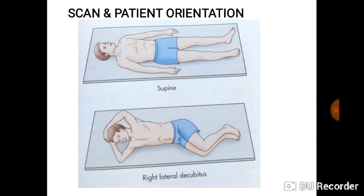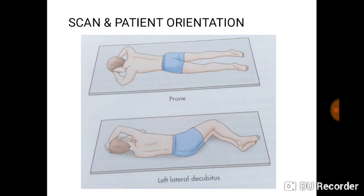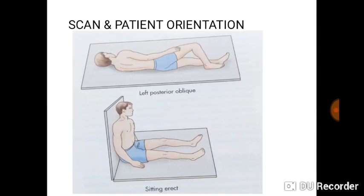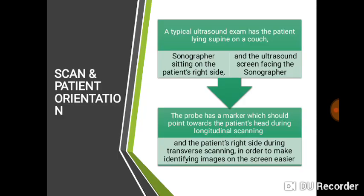Now let's look at scan and patient orientation when doing ultrasound. Just like in regular anatomy, you need to know what positions to place the patient for certain exams. You can scan a patient lying supine, in right lateral decubitus, prone, left lateral decubitus, oblique, semi-erect, semi-recumbent, left posterior oblique, sitting, or even standing — depending on what you want to examine.